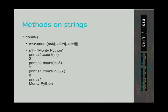In the first case we count the number of times lowercase letter n appears in Monty Python — the program returns 2. In the second case we count starting from index 3, and the program returns 1. Remember zero-based numbering. In the third case we start from index 3 and end at index 7, and this time the program returns 0 because there is no occurrence of letter n between index 3 and index 7. Again, the original string has not changed.